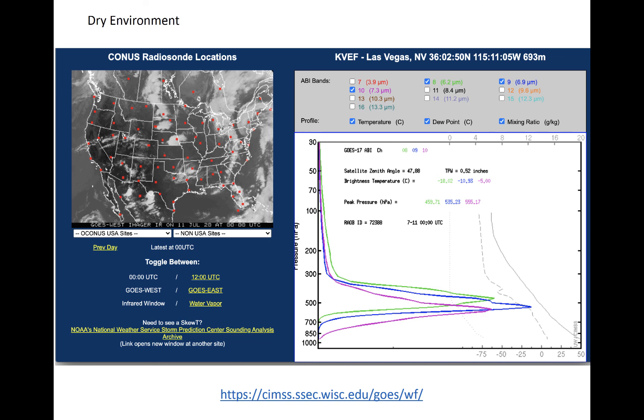However, band 10 still sees radiation from further down in the troposphere than bands 8 or 9. Therefore, we should expect that the band 10 brightness temperature will be the warmest of the three at this location.